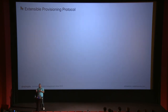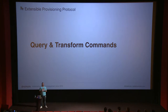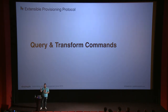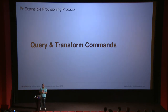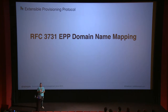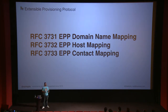Each of these entities can be altered by query or transform commands. Query commands — like check, info, poll, or transfer — don't alter data; they just retrieve information from the registry. Transform commands — like create, delete, renew, transfer, and update — alter the state at the registry. These commands don't have to be synchronous; you send a request, get a response, but the response can be pending. How these commands work on the domain entity is specified in RFC 7371, the domain name mapping, with separate mappings for hosts and contacts.